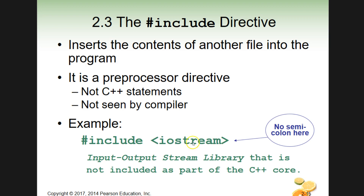We have a name here — iostream. Since we've been using it as an example, this is a library: the input/output stream library. That library is a set of instructions for the computer — it's more code. For example, when we use cout and later cin, those are not included in the core components of C++, so we have to tell the compiler that we want to load this particular library so we can use its commands.